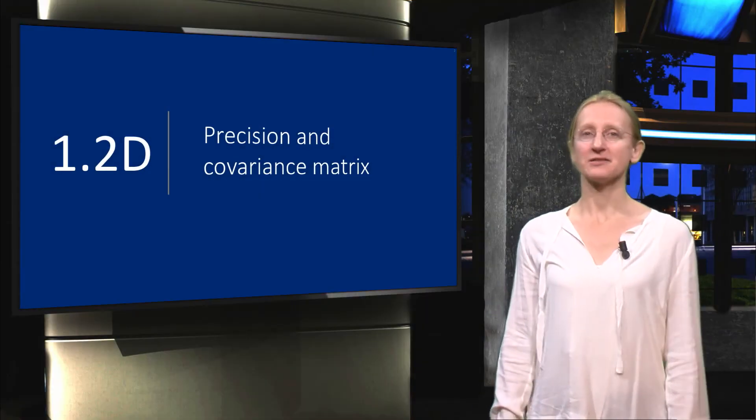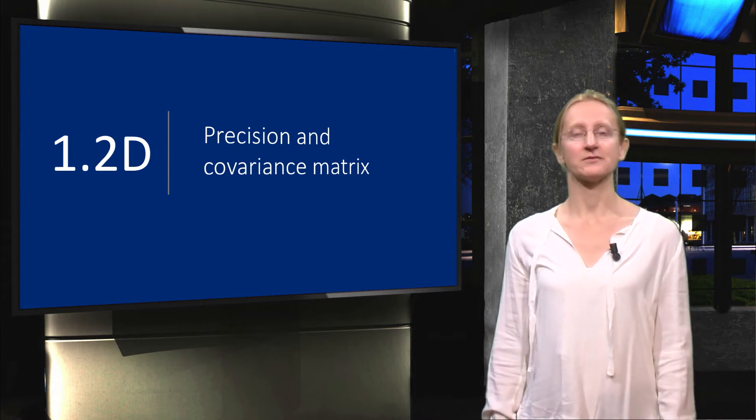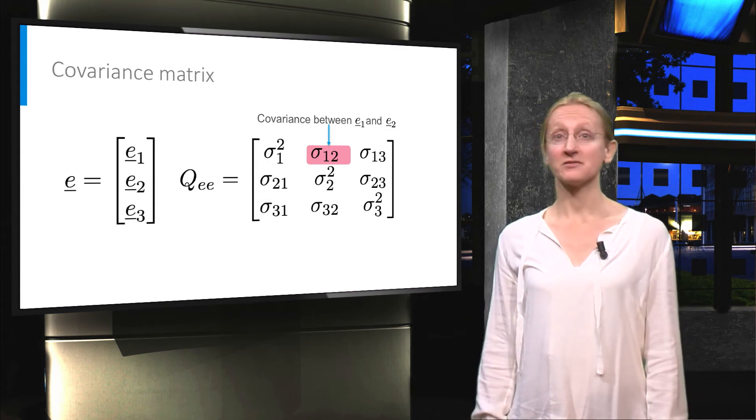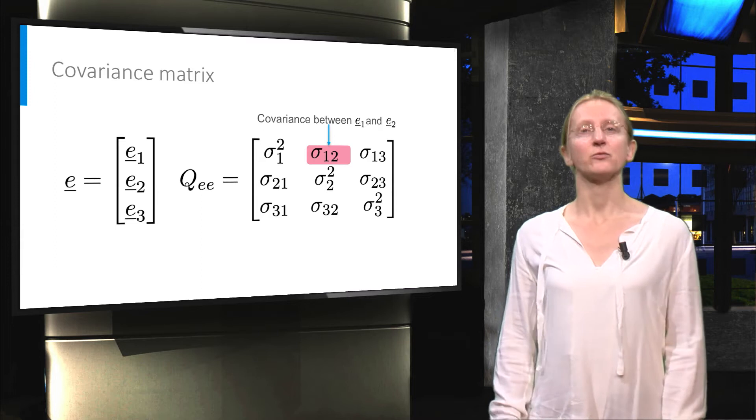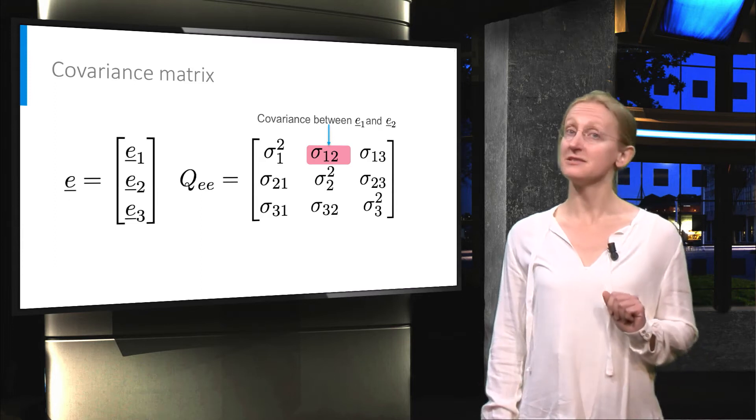You have now seen some examples of covariance matrices, all with covariances equal to zero. But what does it mean if the covariances are not equal to zero? In order to understand that, we need to look at how the covariance of two variables is defined.